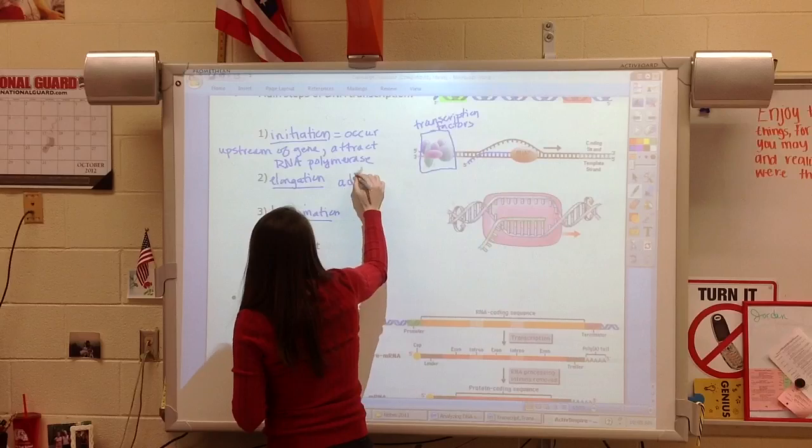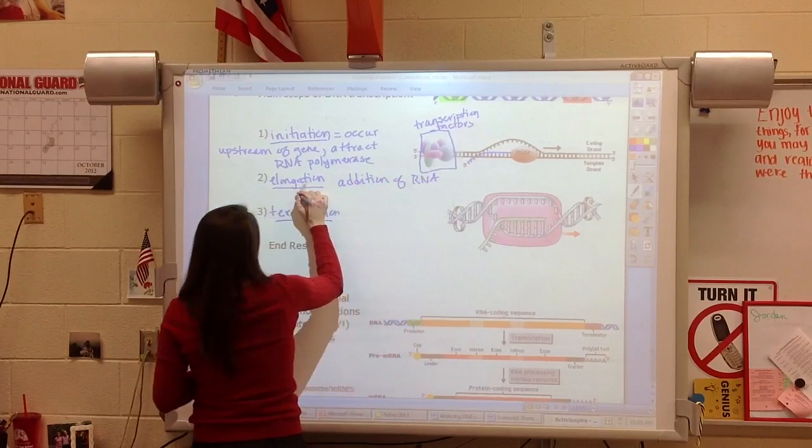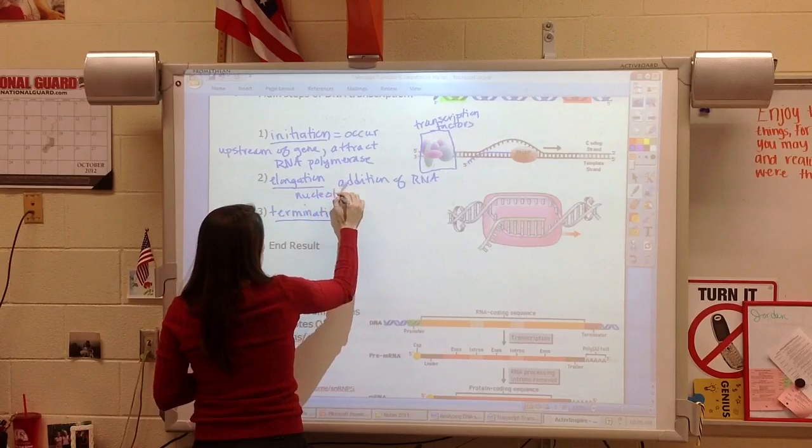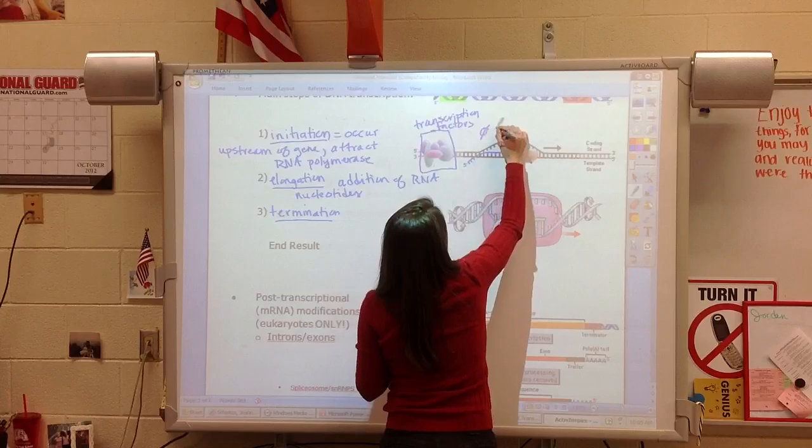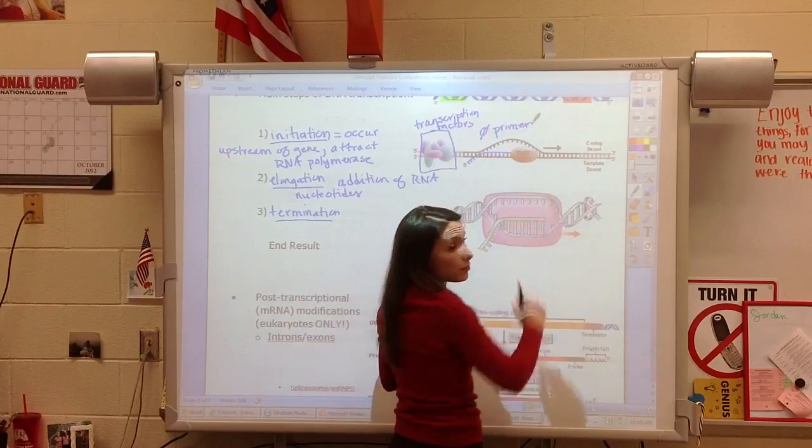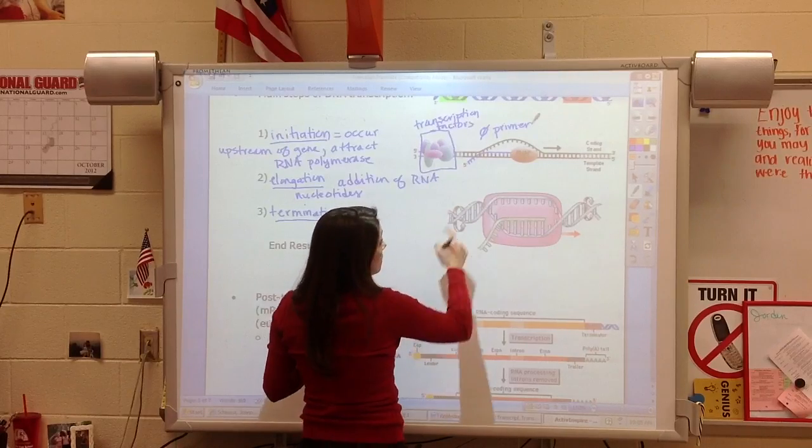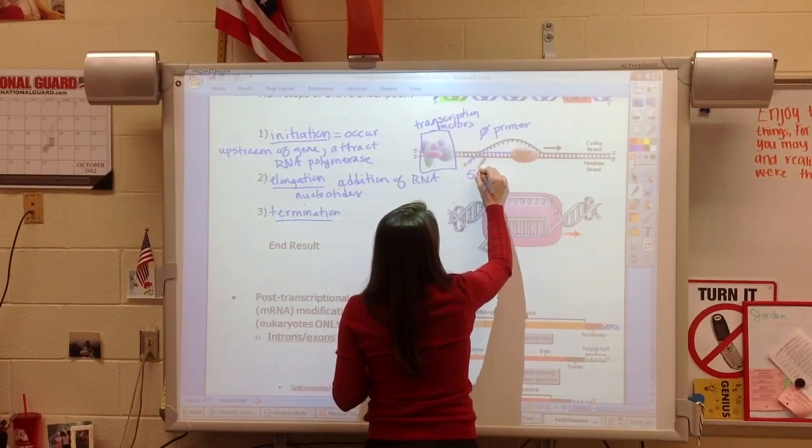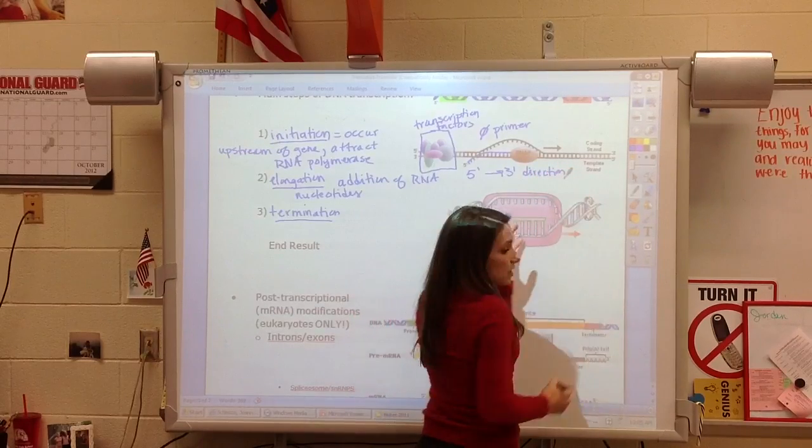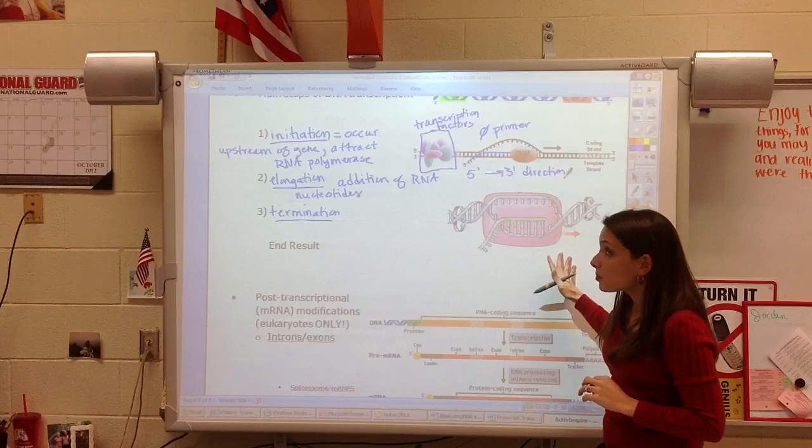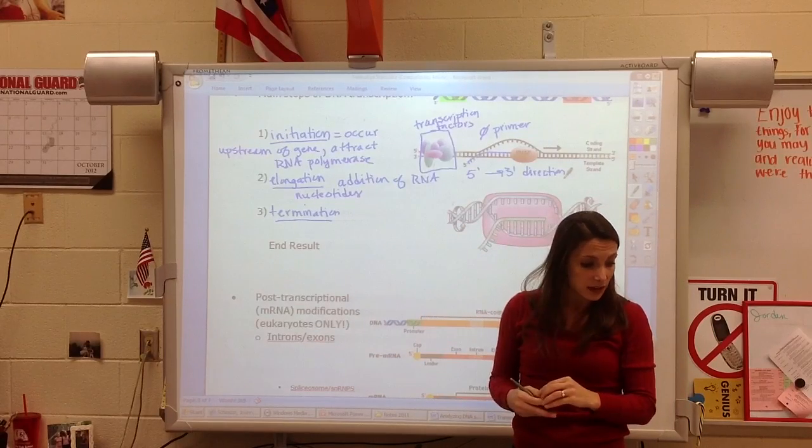Elongation is the addition of RNA nucleotides. We're going to use base pairs. We don't need a primer. So we do want to note no primer is needed because RNA polymerase does not need a primer. It can begin. It synthesizes in a 5 prime to 3 prime direction until it reaches an end point where it will actually stop. And that's really all that termination is, is the end of the gene, which is going to be a specific sequence.